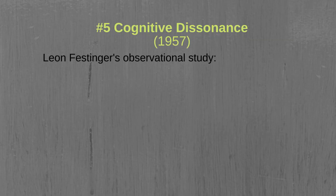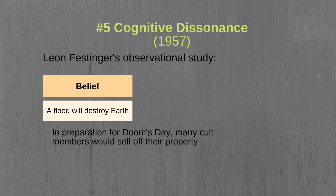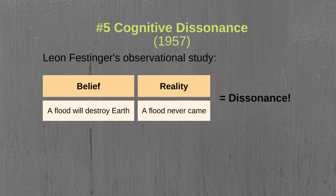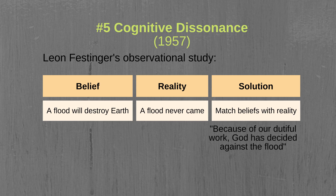The last experiment that we will discuss is one that was conducted by Leon Festinger in 1957. Festinger conducted an observational study of a cult that believed the earth was going to be destroyed by a flood. In preparation for what they believed to be doomsday, many of the cult members sold off their property. When the day came and went without any flood, there was a discrepancy or dissonance between what the cult members believed was going to happen and what actually happened. To deal with the negative emotions stemming from this discrepancy, many of the cult members adjusted their beliefs to match reality, claiming that because of their dutiful work, God had decided against the flood.